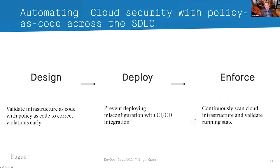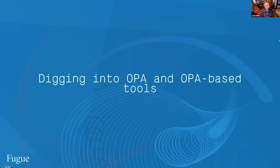We believe policy as code should be used all the way through the software development lifecycle — from design time, where you might catch a third to half of misconfigurations, to deploy time, where policy as code prevents insecure changes through build failures, and then post-deployment, because cloud infrastructure is mutable and does get changed. You need that same policy as code to alert you if something dangerous happens, like somebody opening a hole in a security group during a maintenance window.